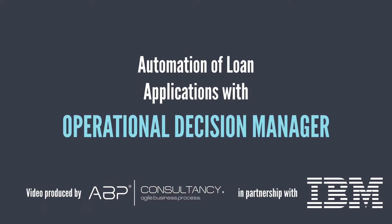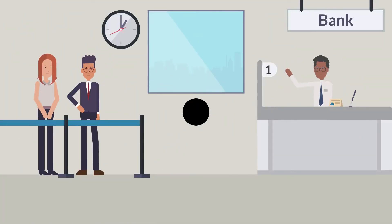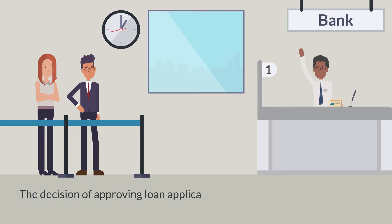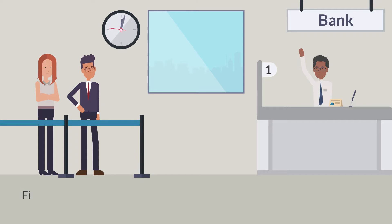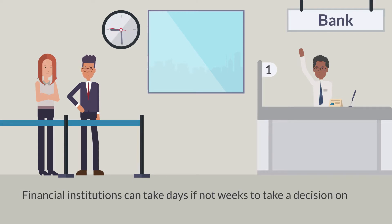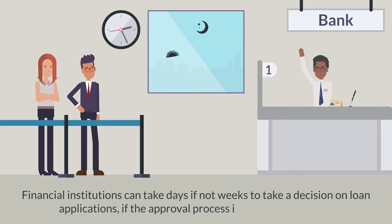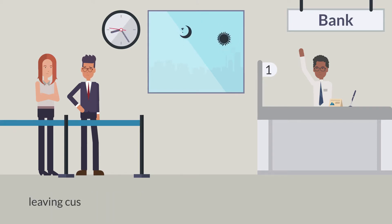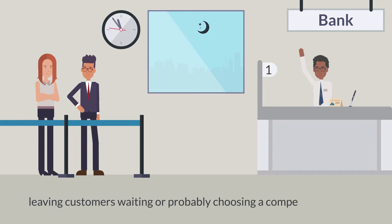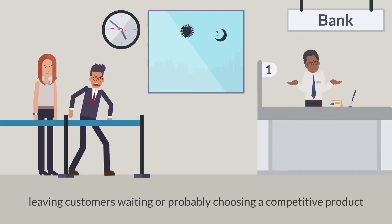Automation of Loan Applications with Operational Decision Manager. The decision of approving credit cards or loans for customers is dependent on various rules and policies. Financial institutions can take days, if not weeks, to make a decision on loan applications if the approval process is managed manually, leaving customers waiting or probably choosing a competitive product.